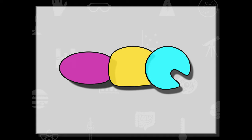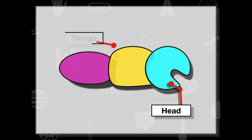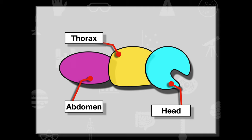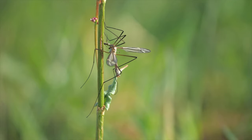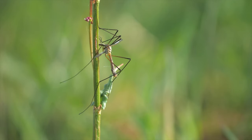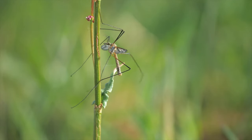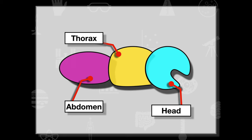An insect consists of three fundamental main parts. The first is the head, the second is the thorax — the middle section — and lastly the abdomen. Within each of these three sections we'll see different structures associated with the function and ability of the organism to survive.